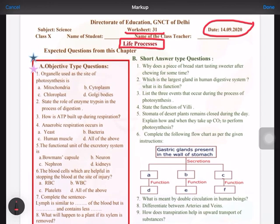First is organelle used as the site of photosynthesis, so it is chloroplast, because chloroplast is the organelle which is present in the plants only. State the role of enzyme trypsin in the process of digestion.